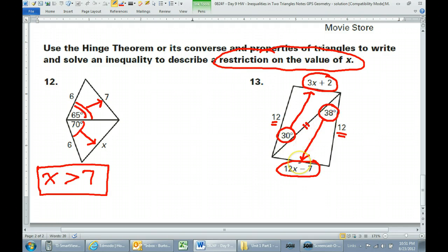So the bigger side would be across from the bigger angle. So that means the 12x minus 7 must be greater than the 3x plus 2. So you can write that inequality.